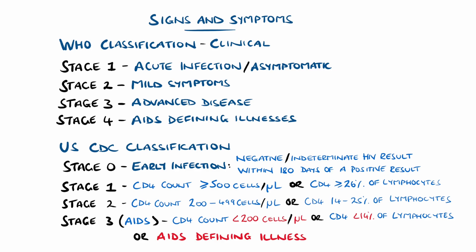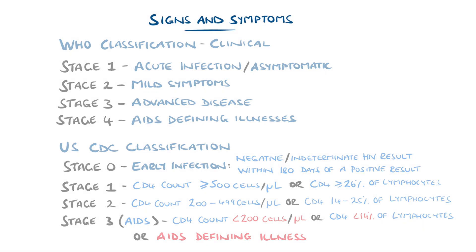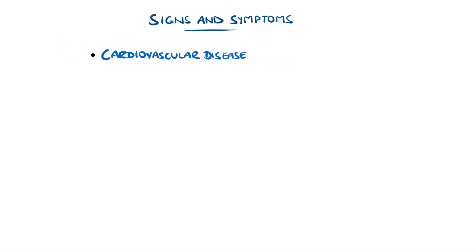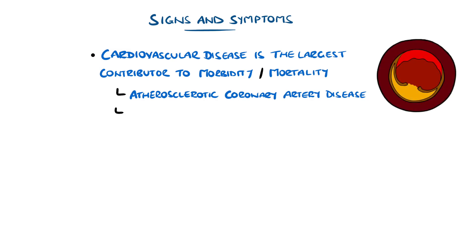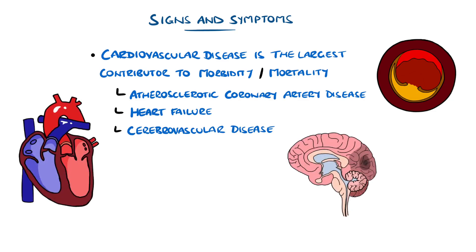A link to the full lists will be left in the description. Despite these staging criteria, the largest contributor to morbidity and mortality in HIV and AIDS patients is cardiovascular disease, particularly from atherosclerotic coronary artery disease, but also other conditions such as heart failure and cerebrovascular disease, though the underlying mechanisms are still not fully understood.